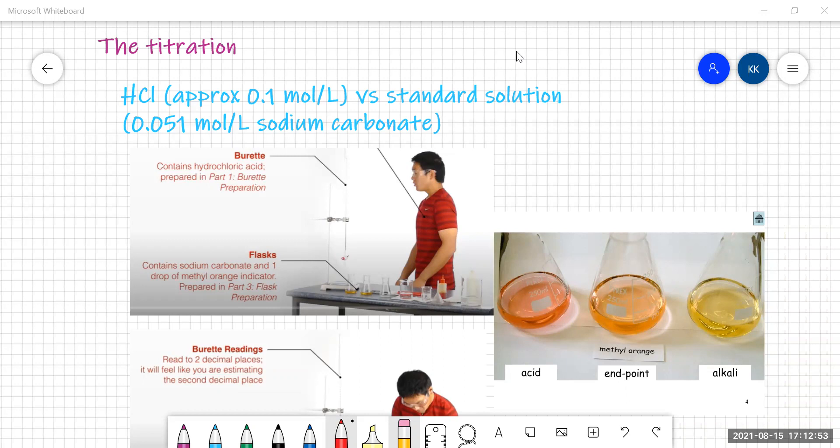In this titration we are going to standardise, or that is find the concentration of, some hydrochloric acid which we know is approximately 0.1 moles per litre.